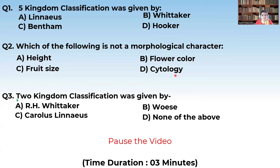Now let us see the third question: Two Kingdom Classification was given by — it was Linnaeus who gave the Two Kingdom Classification.